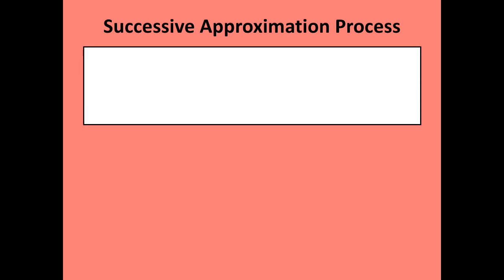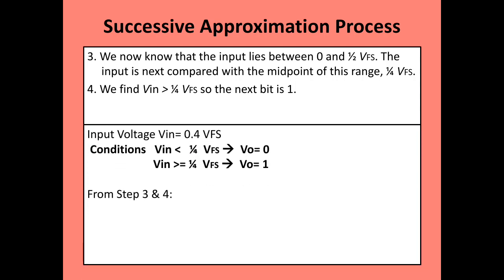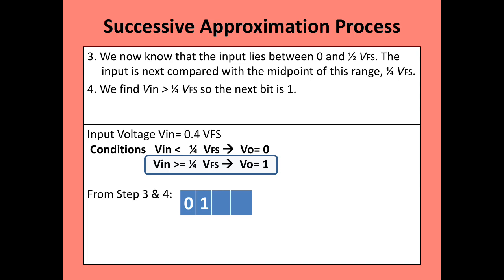Now we consider the range from 0 volts to one-half VFS as the full range and divide it into two equal parts. The new midpoint is one-quarter of VFS. We compare the input voltage: is it less than one-quarter VFS, or greater than or equal to one-quarter VFS? The input voltage 0.4 VFS is greater than one-quarter VFS, so the second condition is satisfied. The output becomes 1, and that is the next bit in the digital output.